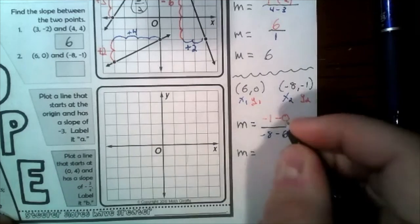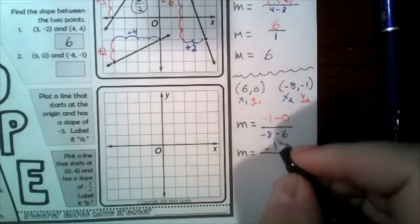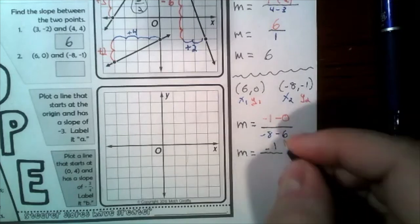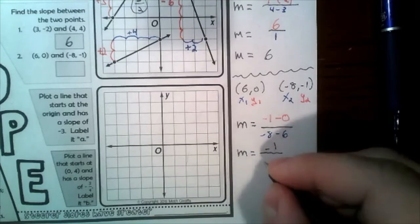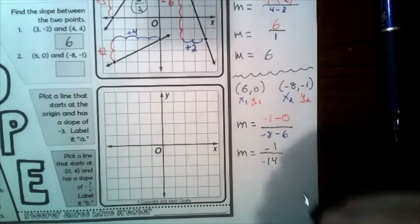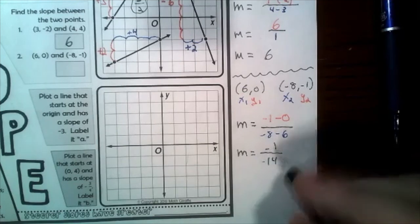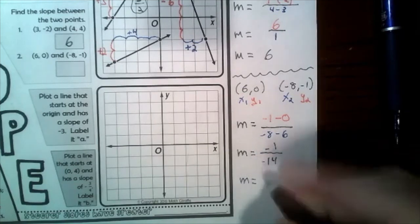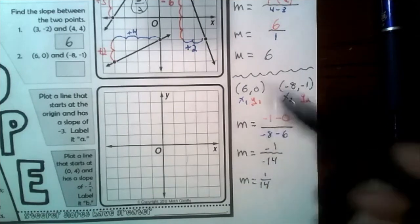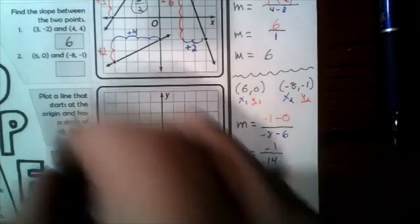Negative 1 minus 0 is negative 1. Negative 8 minus 6 — remember our integer rules — if I have negative 8 and negative 6, I have negative 14 altogether. Then negative 1 divided by negative 14: a negative divided by a negative is a positive. So our answer — the slope between (6, 0) and (−8, −1) — is 1/14.